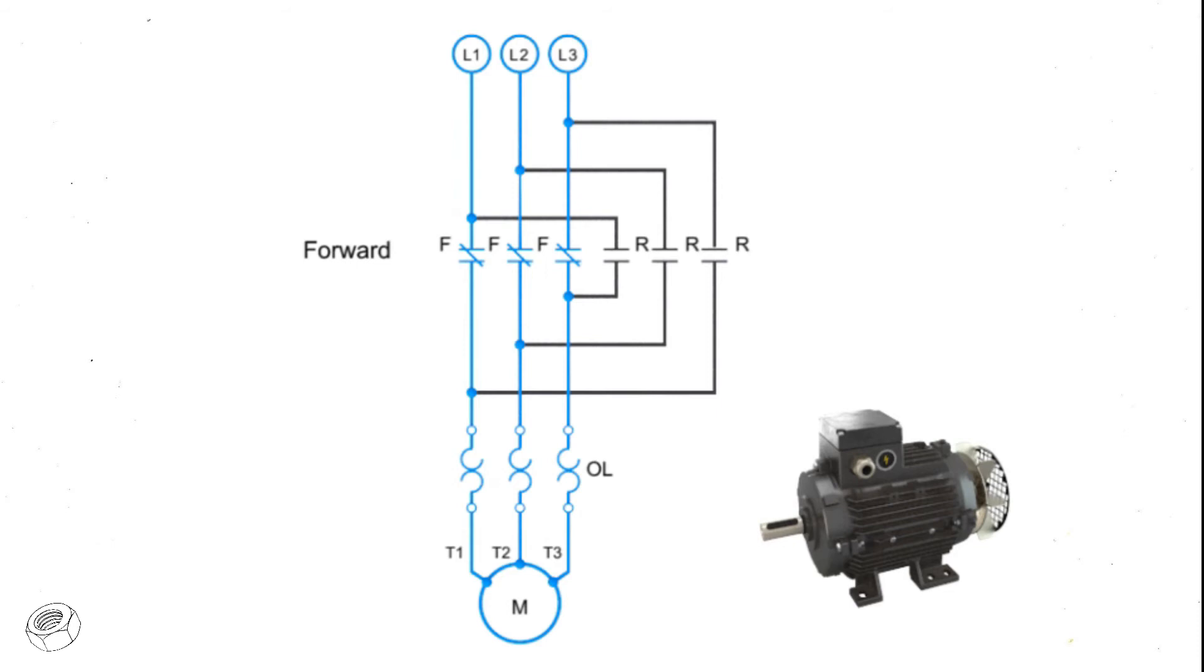To run the motor in reverse then, two of the contacts must be switched. In this case, L1 is connected to T3, and L3 is connected to T1. L2 and T2 remain connected.